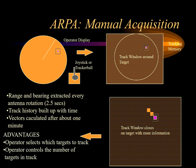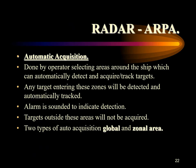The advantages of manual acquisition are that the operator can control the number of targets, can distinguish between land, rain, sea, and ship targets, and by proper use of trails will be able to distinguish between the targets.